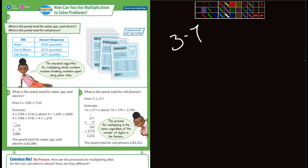Let's look at this first example. The question says what's the yearly total for water, gas, and electric? It says quarterly, and that means how many quarters go into a dollar? Four quarters in a dollar, so there's four quarters in that yearly bill. What are we talking about here? We're talking about 760 dollars times 4, and then 510 dollars times 4.